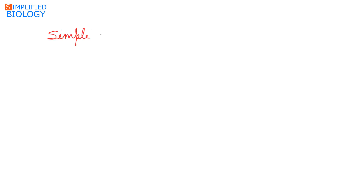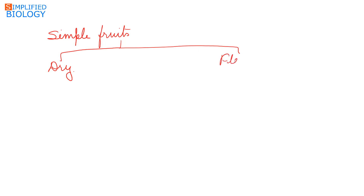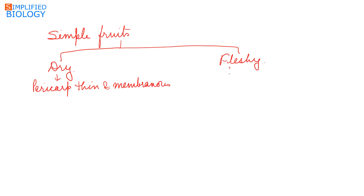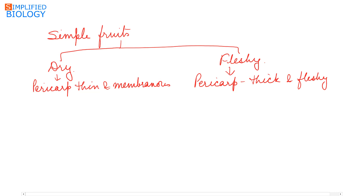Simple fruits, which develop from a monocarpellary or polycarpellary syncarpous ovary, can be further divided into two types: simple dry and simple fleshy. In simple dry fruits, the pericarp is thin and membranous, while in simple fleshy fruits the pericarp is thick and fleshy and can be divided into epicarp, mesocarp, and endocarp.